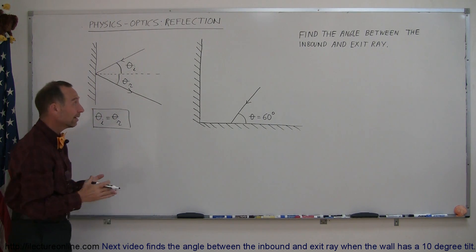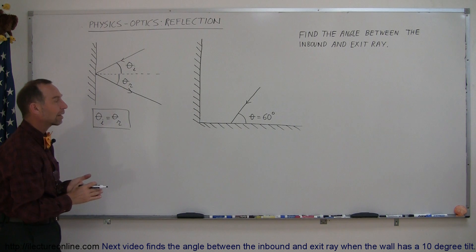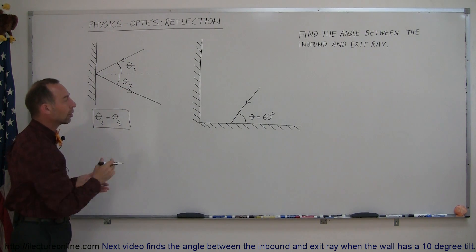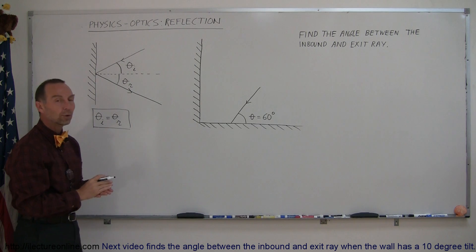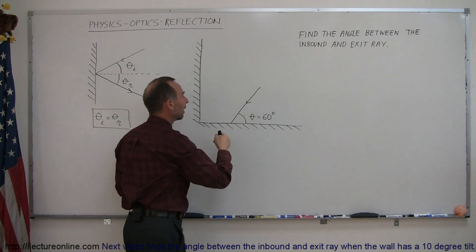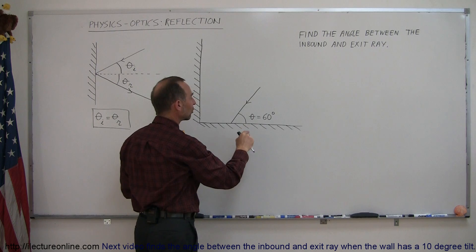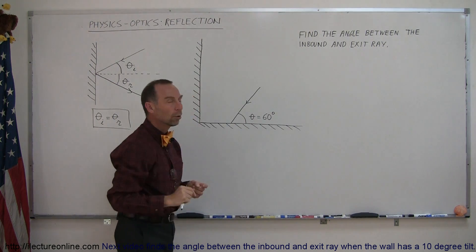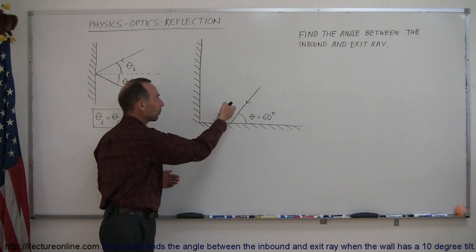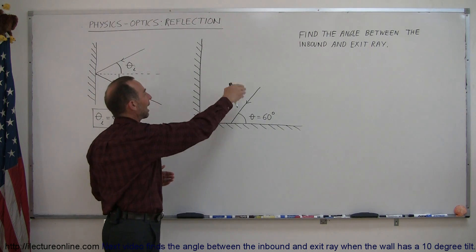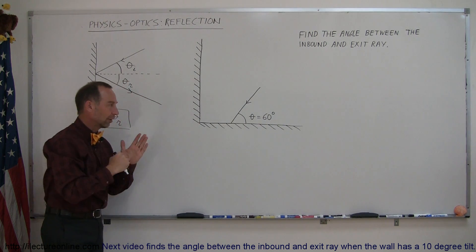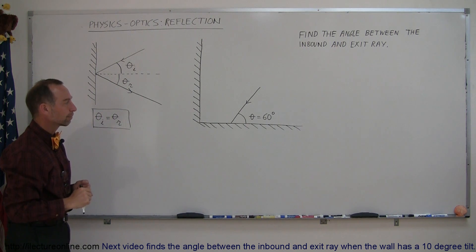That seemed easy, and it is — but can we apply it to something a little bit more complicated? Let's say we have what we call a corner reflector, and we have an inbound ray of light at an angle of 60 degrees with the horizontal. What will be the angle between the inbound ray and the exiting ray after it bounces off these two surfaces that are at right angles to one another?